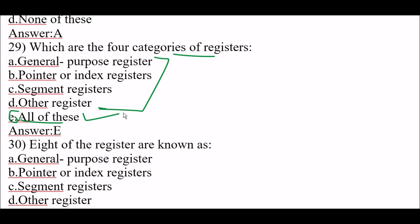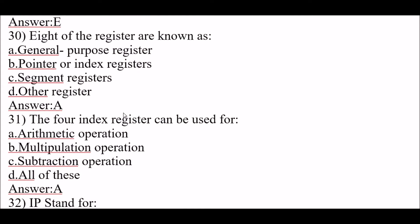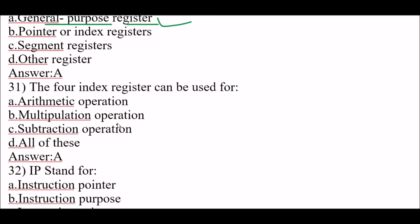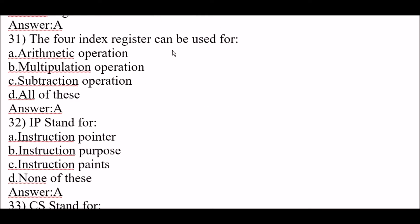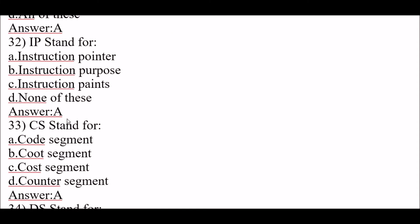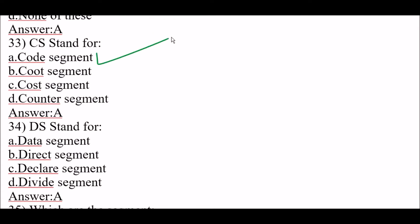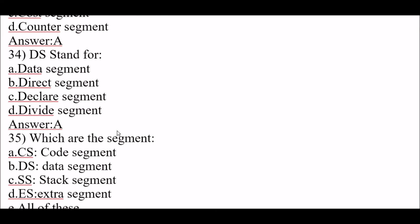Next question: eight of the registers are known as general purpose registers. Next question: the four index registers can be used for arithmetic operations. IP stands for instruction pointer. CS stands for code segment. DS stands for data segment.